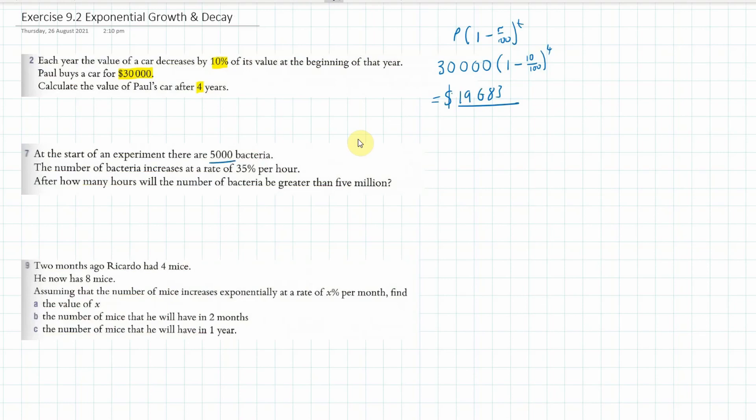Number seven, we've got some bacteria and the number of bacteria increases at a rate of 35 percent per hour. After how many hours will the number be greater than five million?